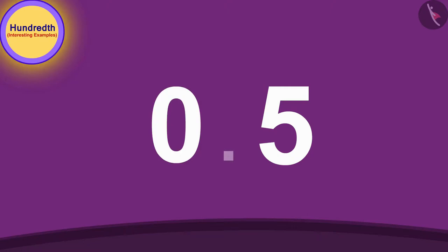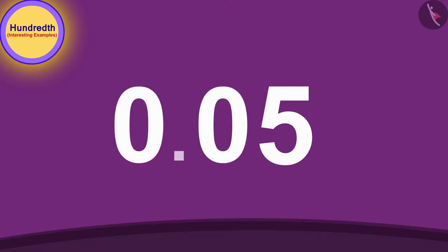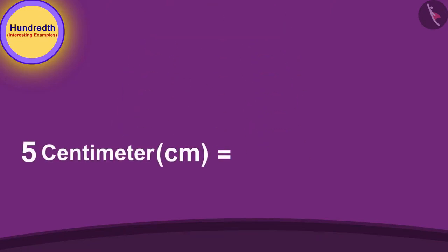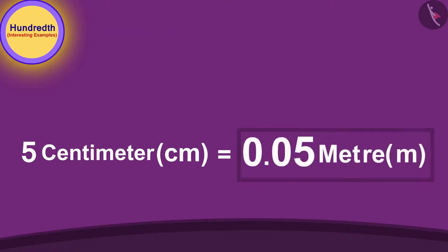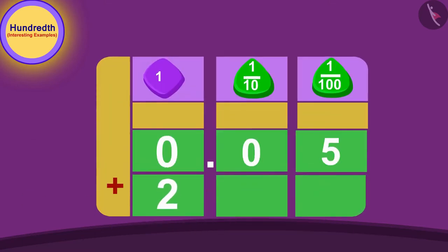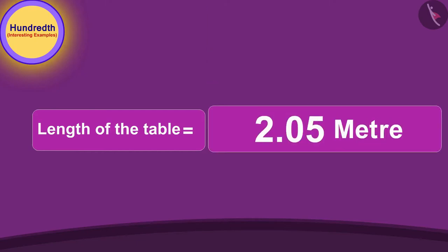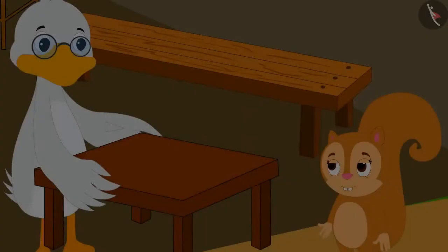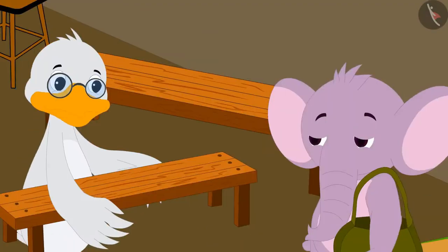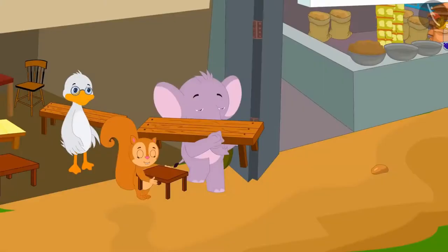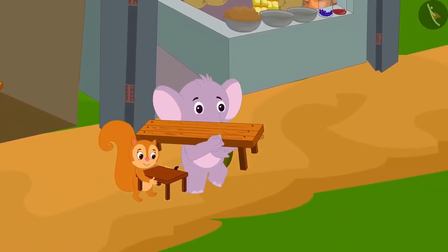In this way, five centimeters is 0.05 meters. Now if we add two meters to it, the length of the table will be 2.05 meters. Chanda and Appu bought their own tables and happily returned home.